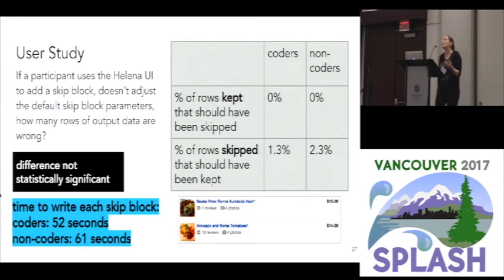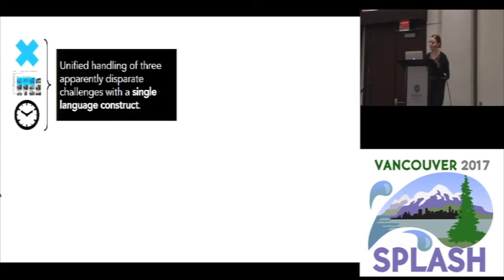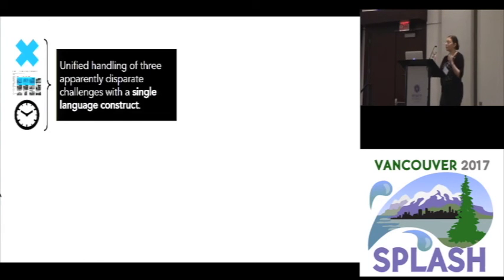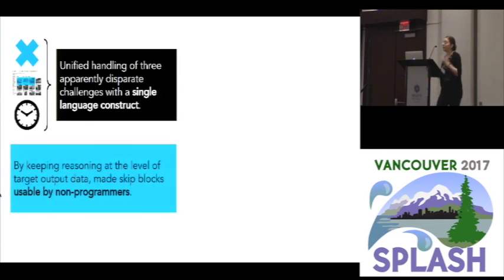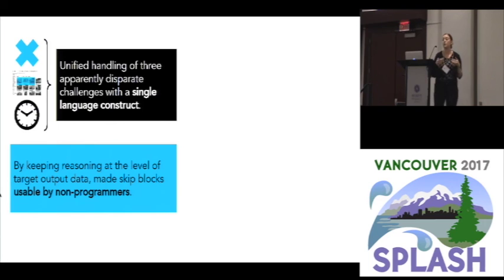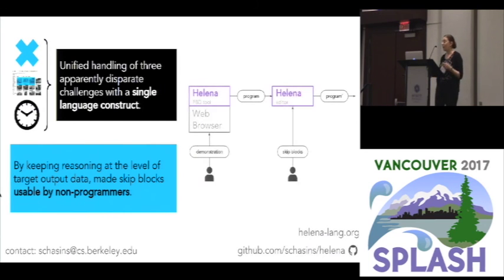Excitingly, the difference between coders and non-coders was not statistically significant — we actually expected it would be. We were also excited by how quickly people learned this task: all within a 12-minute online survey, participants took four minutes to learn what skip blocks were and then one minute each to write eight quite good skip blocks, with less than three percent error rates. The key takeaway messages: we were able to handle three pretty different problems with a single simple language construct, and by keeping the reasoning at the level of the target output data, we were actually able to make it usable by non-coders. With that, I'd love to take any questions.